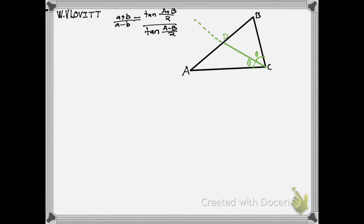Now we consider another construction: the perpendiculars dropped from A and B to the line CD. So we drop one perpendicular from A — that foot we'll call M — and one from B, whose foot we'll call N.